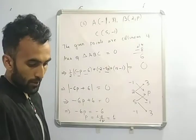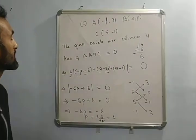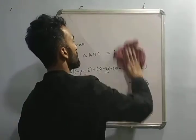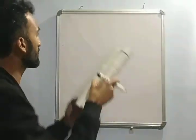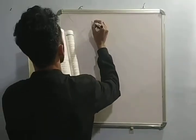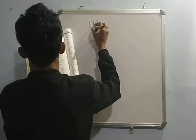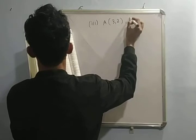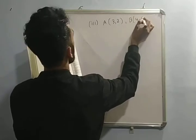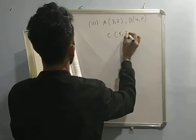Now, one question you can try by yourself. Sub number 3 you try by yourself, and question number 5 also — all the questions you try by yourself. Sub number 3 goes like this: A is 3 comma 2, B is 4 comma P, and C is 5 comma 3. Find out the value of P for which they are collinear.